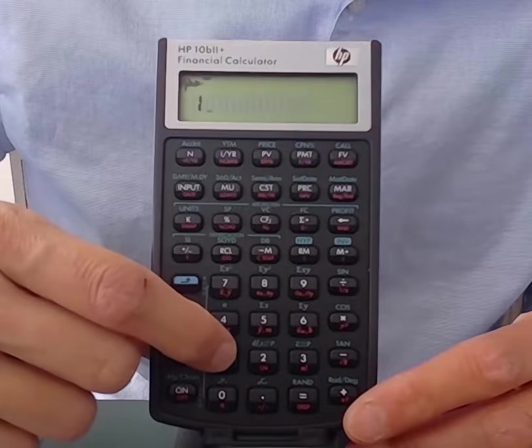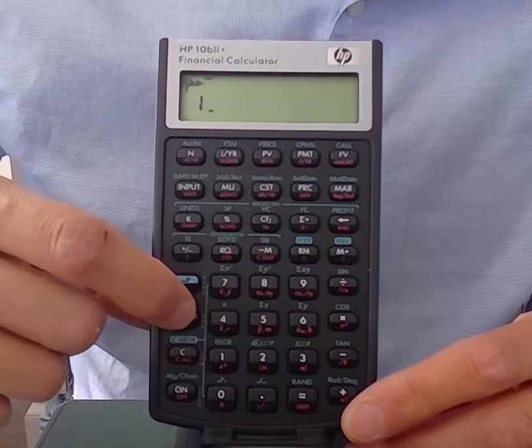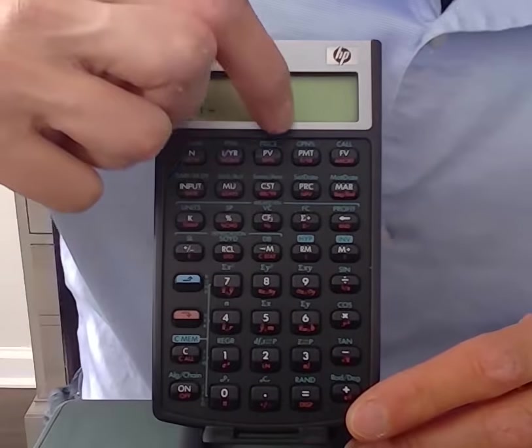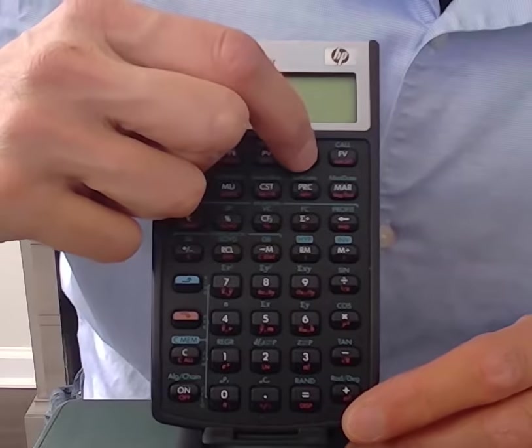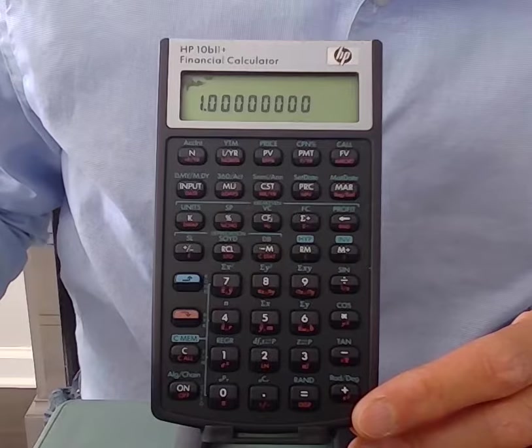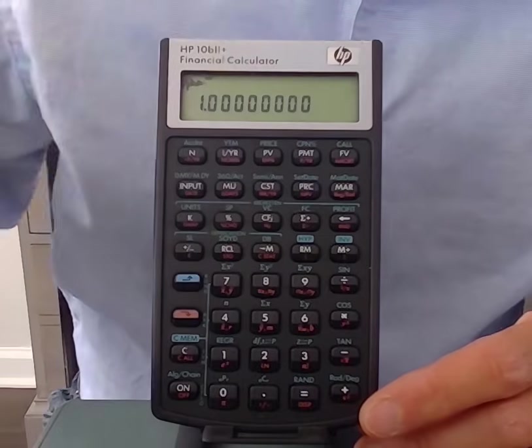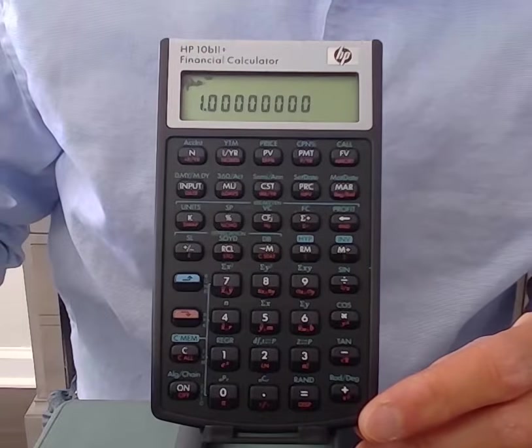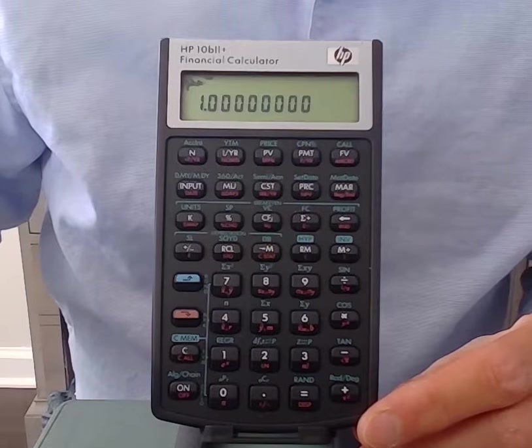So we'll press the 1, shift, and then up here where it says PMT, you see it also says P slash YR, also in red. And after I did the shift P YR, the 1 is now stored as the periods per year.